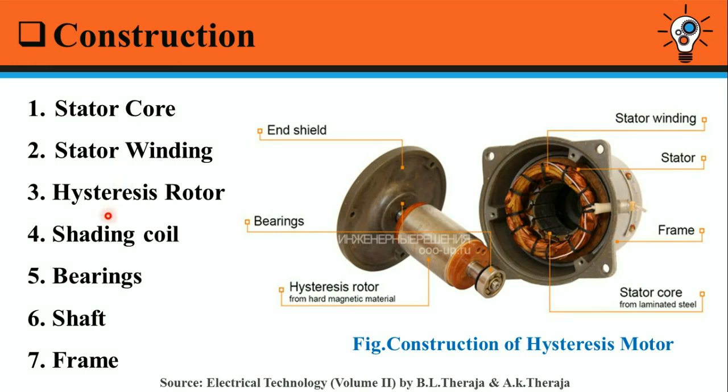Third is the hysteresis rotor. The hysteresis rotor is made from hard magnetic material. It is generally made up of smooth chromium steel having higher retentivity, so that hysteresis loss is high but there is no eddy current loss. This is the hysteresis rotor.